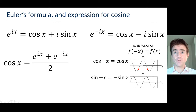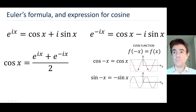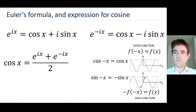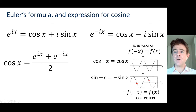Now notice that for the sine function, we've written minus i sine x rather than plus i sine minus x. Why is that? It's because sine is an odd function, which means that as we progress a distance x along the x-axis and look at the function value, if we progress that same distance in the negative direction, we get the negative of that function value. So f of minus x equals negative f of x, meaning sine of minus x is rewritten as minus sine x.